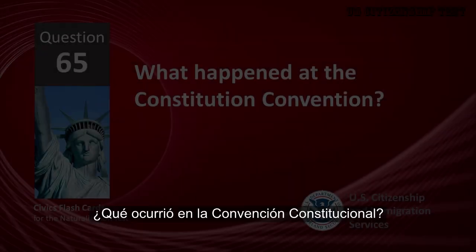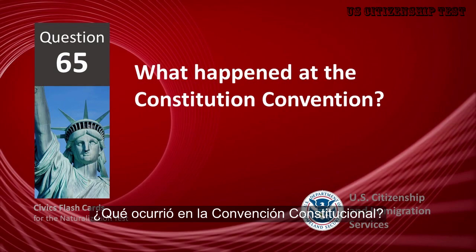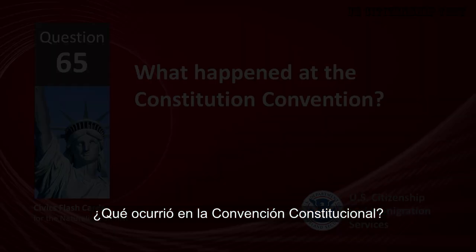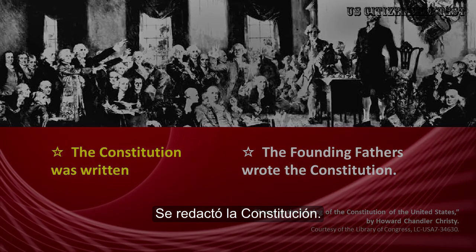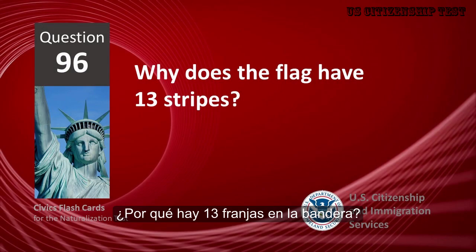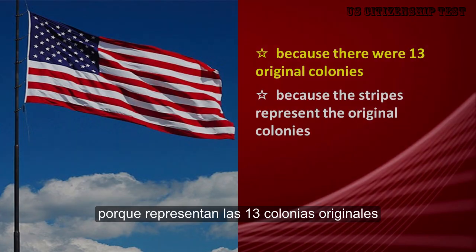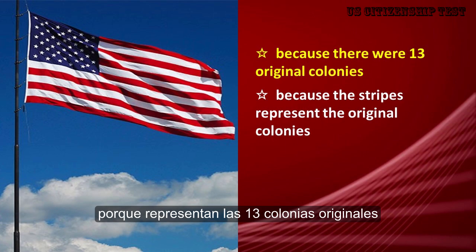What happened at the Constitutional Convention? The Constitution was written. Why does the flag have 13 stripes? Because there were 13 original colonies.